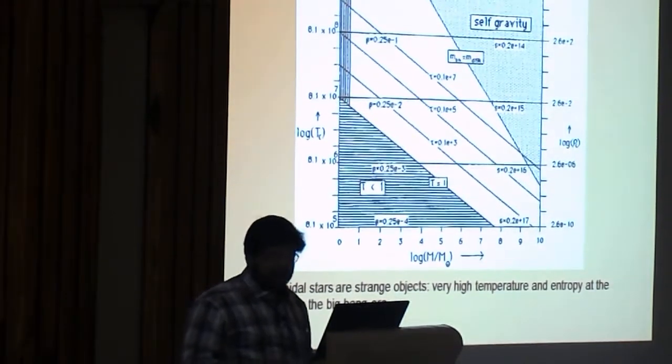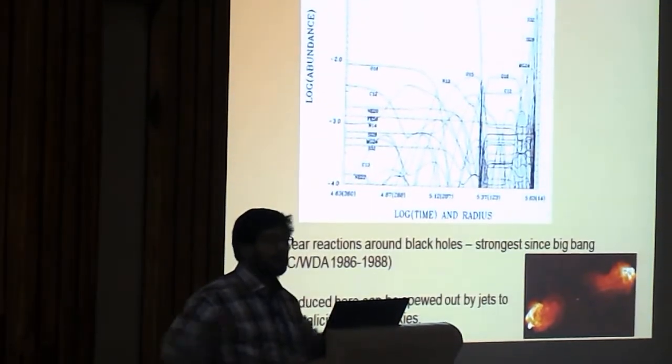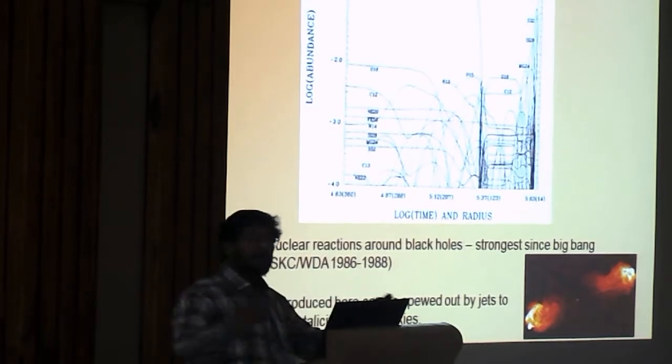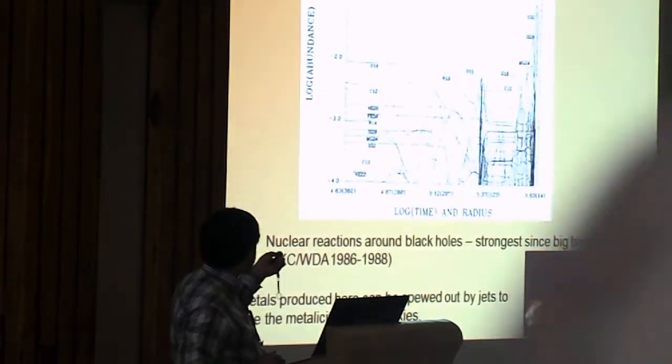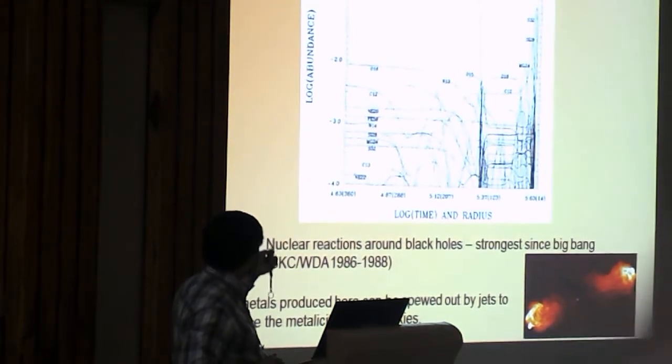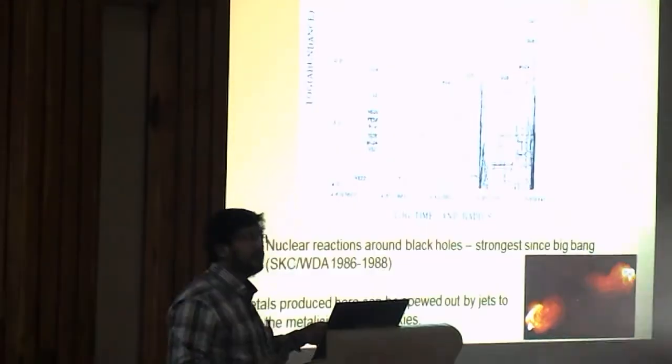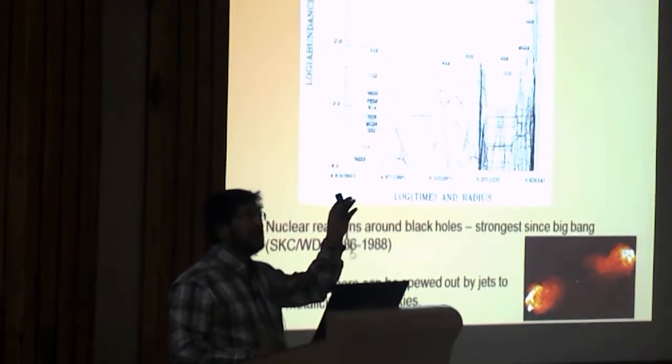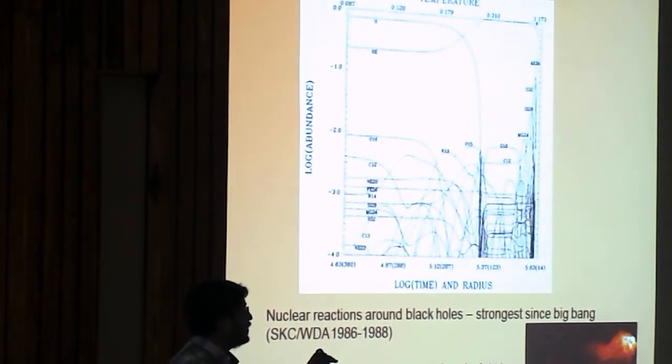And then, so we started calculating nuclear reactions. So, when the matter is going towards the black hole, what are the nuclear reactions which can take place? The matter is coming from the companion star. I think I'm not going to, but we need a backup.